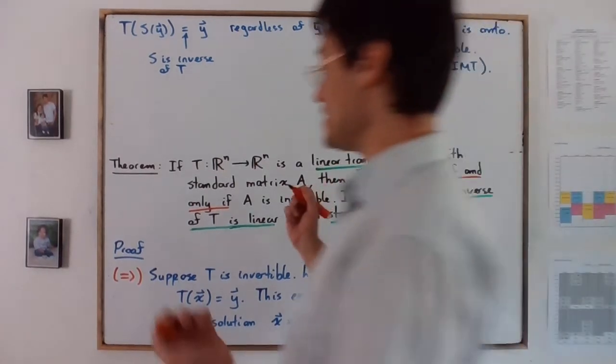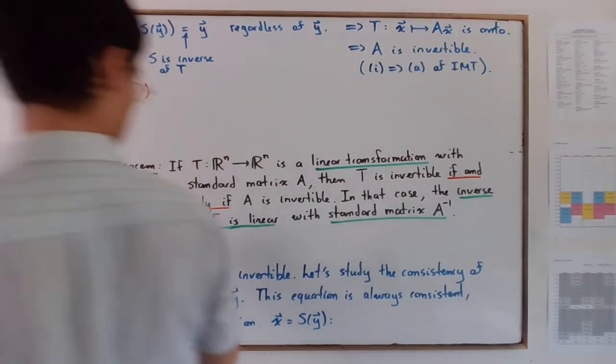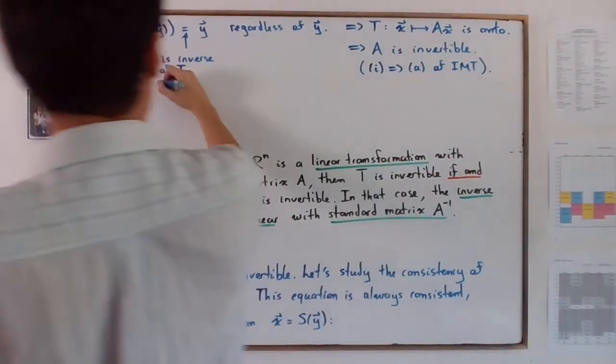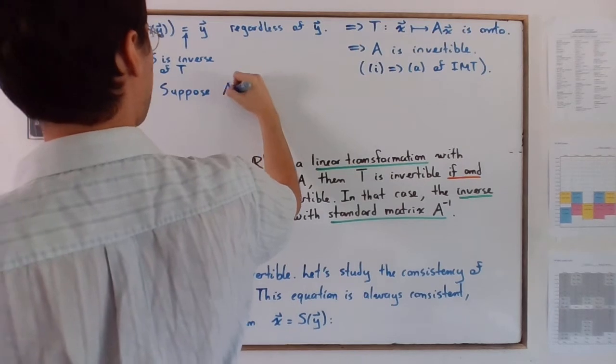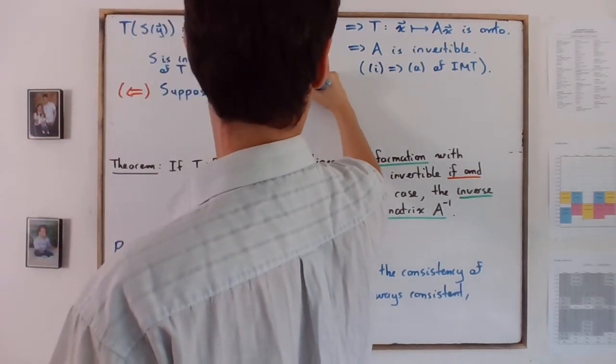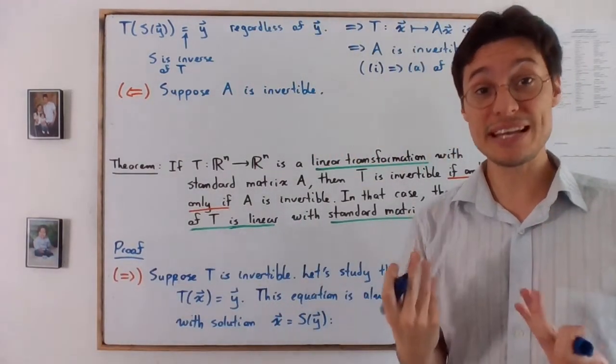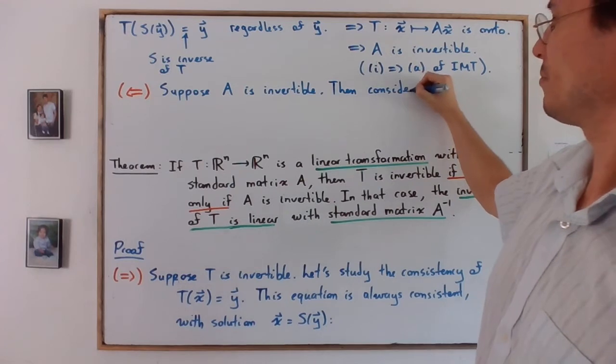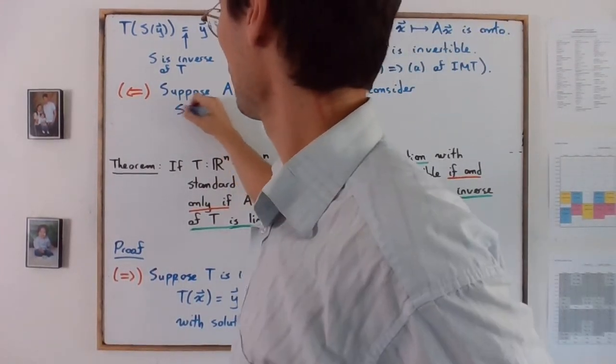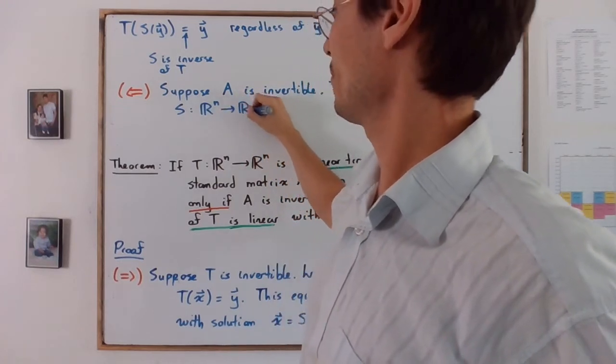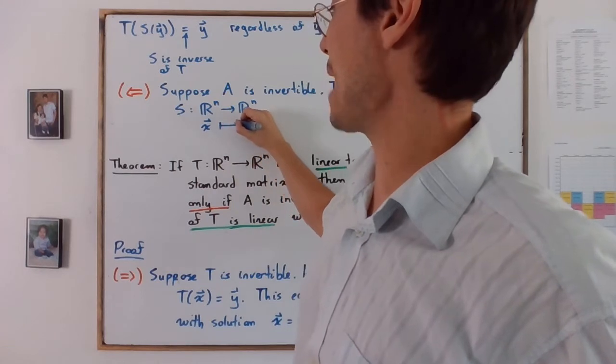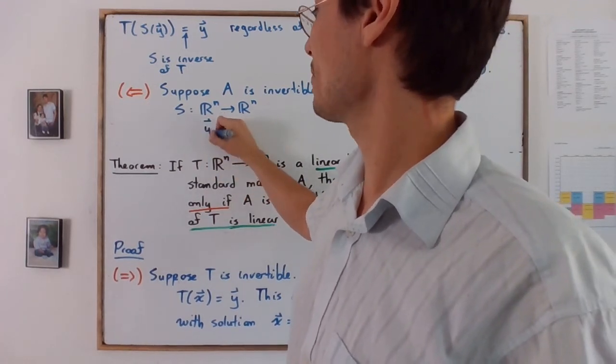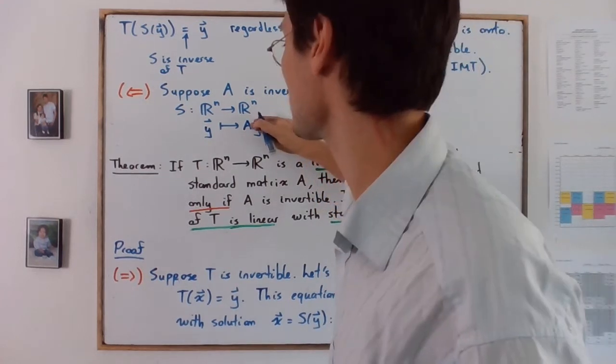Now we need to prove the other direction. Suppose that A is invertible. Then the idea is to consider the linear transformation using the inverse of A. Then consider S to be the linear transformation from R^m to R^m for which y is getting mapped into A inverse times y.